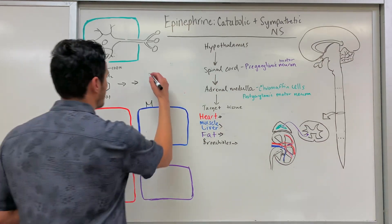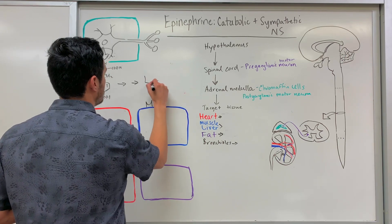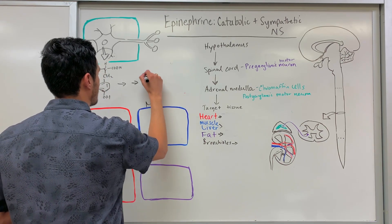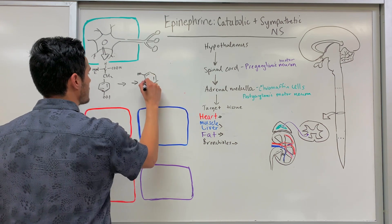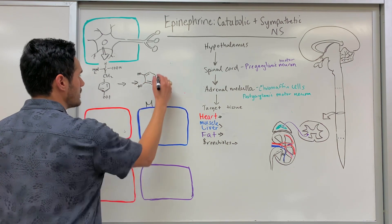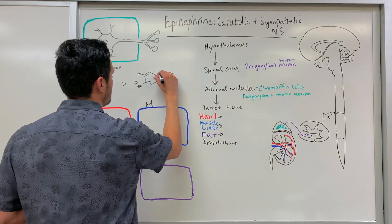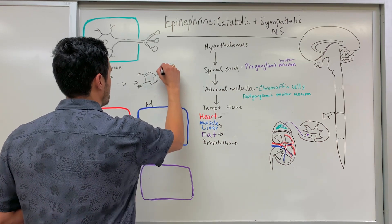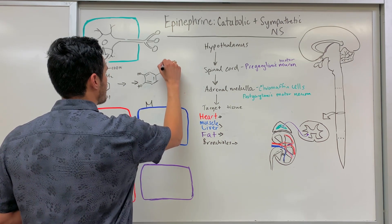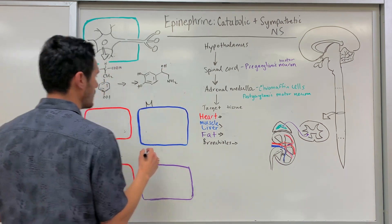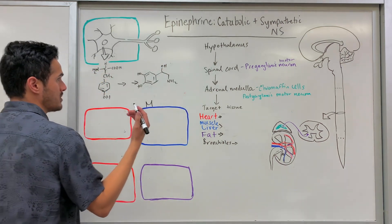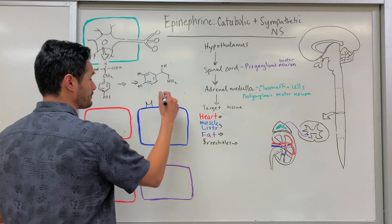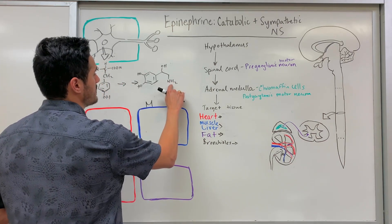What is a catecholamine? This here is the catechol group — that's the catechol part — and then the amine includes this aspect with NH2, and there's also another hydroxyl group. The main difference between epinephrine and norepinephrine is just that epinephrine has a methyl group (CH3) added,